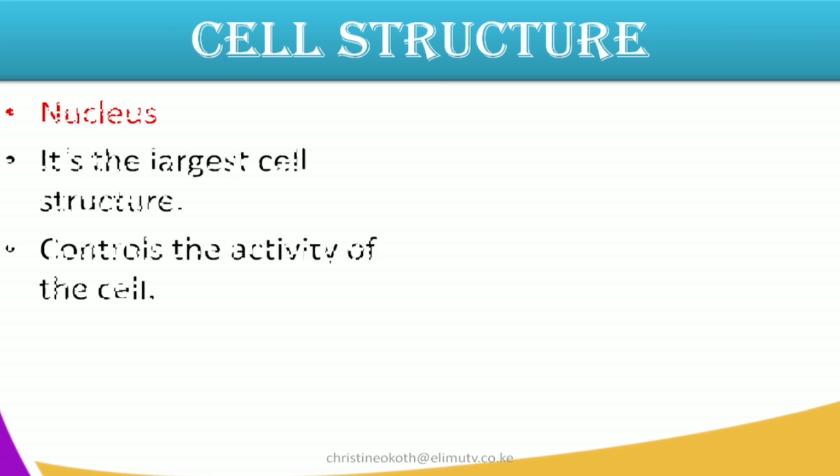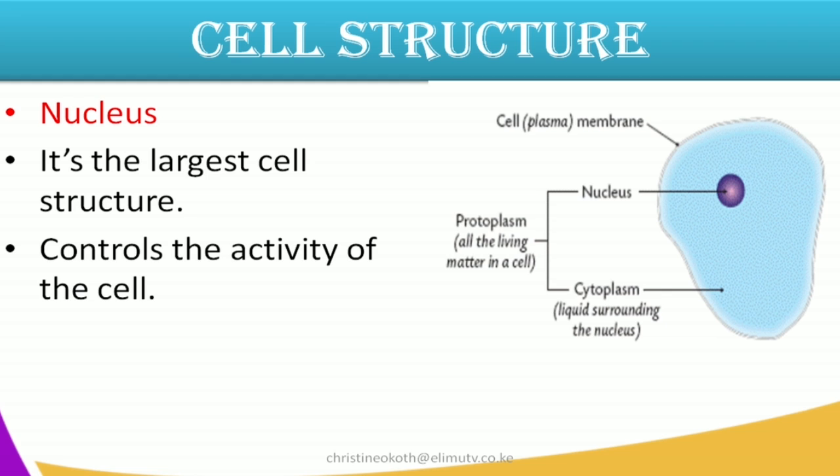The nucleus is found in both the plant cells and the animal cells. It is the largest structure found in both of them. The main function of the nucleus is to control the activities of the cell — all the activities that take place inside the cell are controlled by the nucleus.